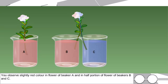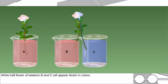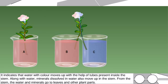After 8 to 10 hours, you observe slightly red color in flower of beaker A and in half portion of flower of beakers B and C, while half flower of beakers B and C will appear bluish in color. It indicates that water with color moves up with the help of tubes present inside the stem.